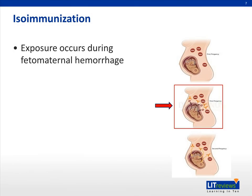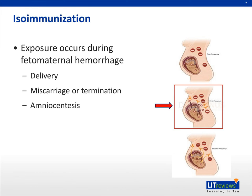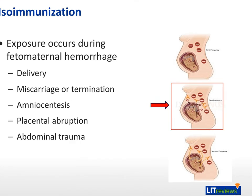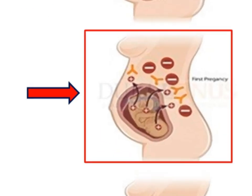So how do fetal blood cells enter the maternal circulation? There are multiple mechanisms in which this happens, which include, but are not limited to, delivery — either vaginal or by cesarean section — miscarriage or pregnancy termination, amniocentesis, placental abruption, and trauma. Remember, isoimmunization only occurs when the mother is Rh negative and her fetus is Rh positive.